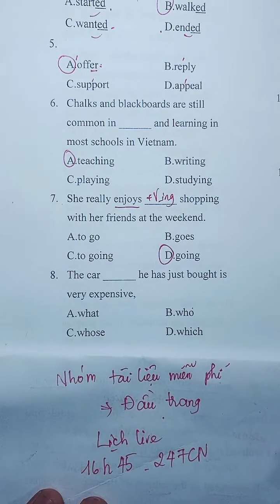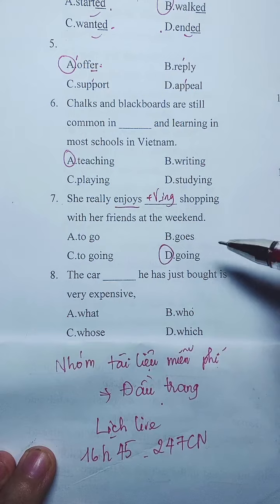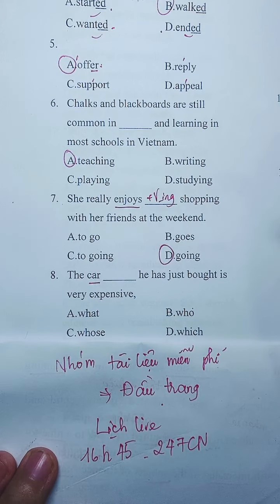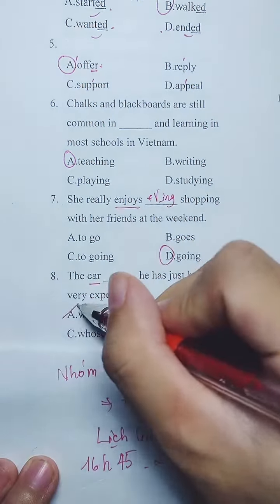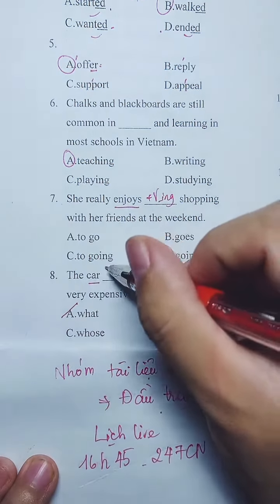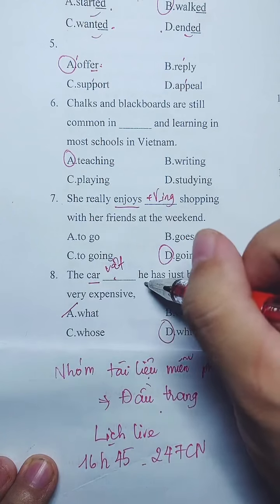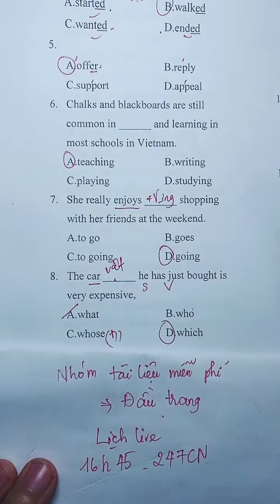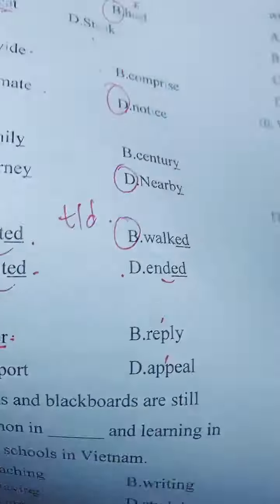Câu 8 thuộc mệnh đề quan hệ. Cái xe ô tô mà anh ta vừa mới mua thì rất là đắt. Câu 8 không dùng A được - không có đại từ quan hệ 'what'. Mình có 'who', 'whose', 'which'. Cái này là vật nên dùng 'which', theo sau là động từ. Còn nếu theo sau là danh từ thì dùng 'whose'. Đáp án câu 8 là D.